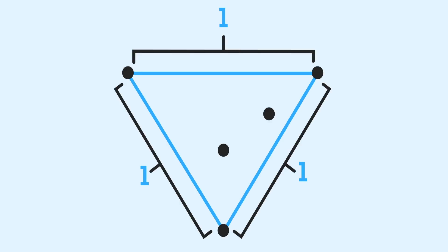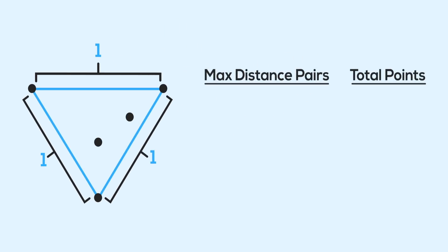So that's a total of three pairs that have that max distance. So writing this out again, the total number of points is five, and the number of pairs that are a max distance away is three.